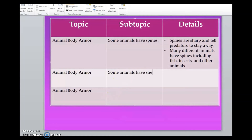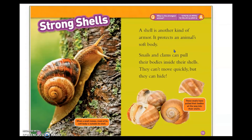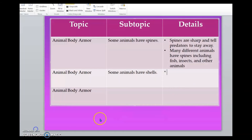Some animals have shells. Now what I would want to do is look back to the text to identify details about animals that have shells. Remember, I don't want to talk about just specific animals, but I want to think about what I can say about many types of shells. A shell is another kind of armor. It protects an animal's soft body. This seems like an important detail — similar to how we said that spines are sharp and tell predators to stay away, something we could say about animals with shells is that shells protect an animal's soft body. Let's see if we can find some more details.